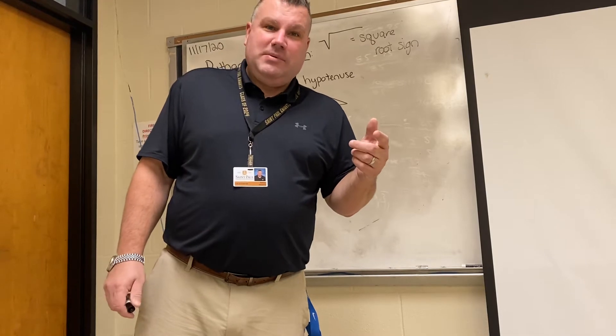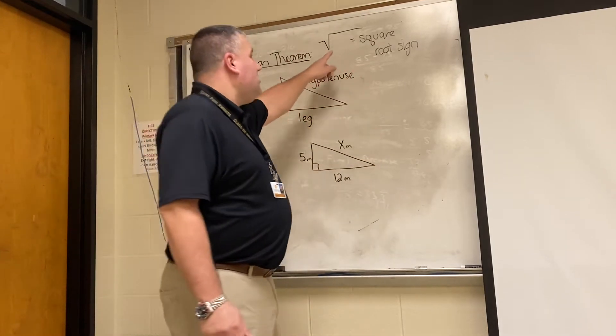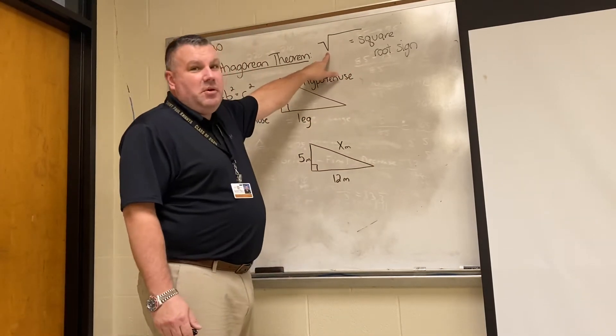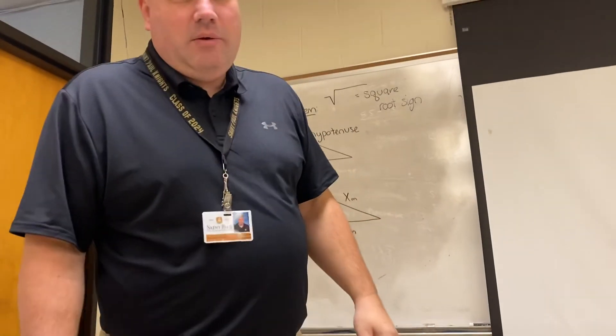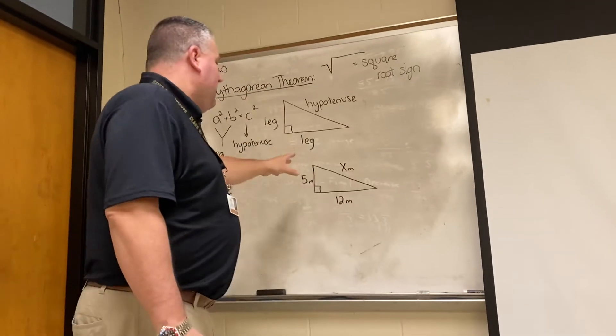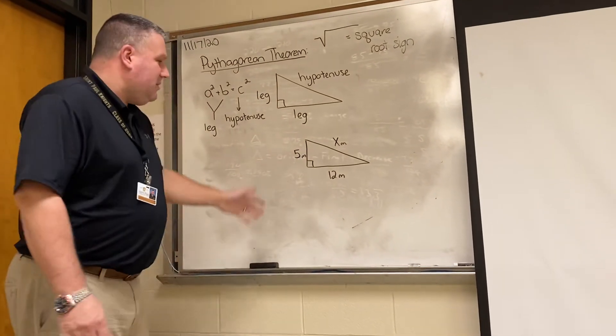The cell phone has this particular button on it. This is called the radical sign, or also known as the square root sign. You will need this in order to complete these. Let's take a look at here. I'll give you a couple examples.